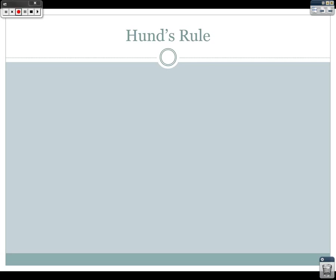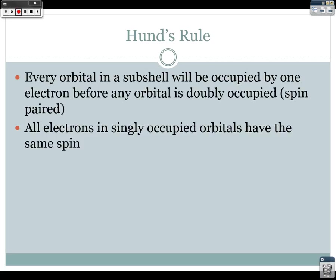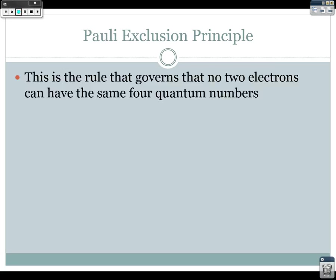There's also Hund's rule, which states that every orbital in a subshell will be occupied by one electron before any orbital is doubly occupied or spin-paired. So as we add electrons one at a time, we put one into each slot before we can doubly add them. The third rule is the Pauli exclusion principle: no two electrons can have the same four quantum numbers.